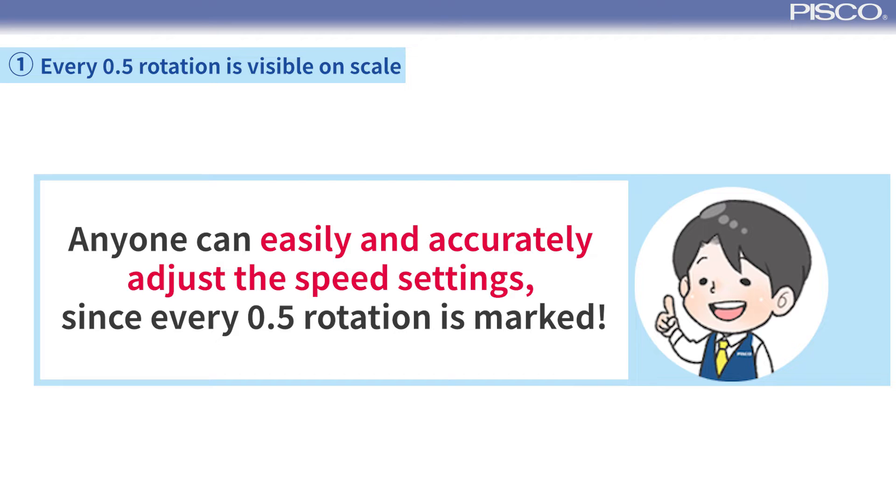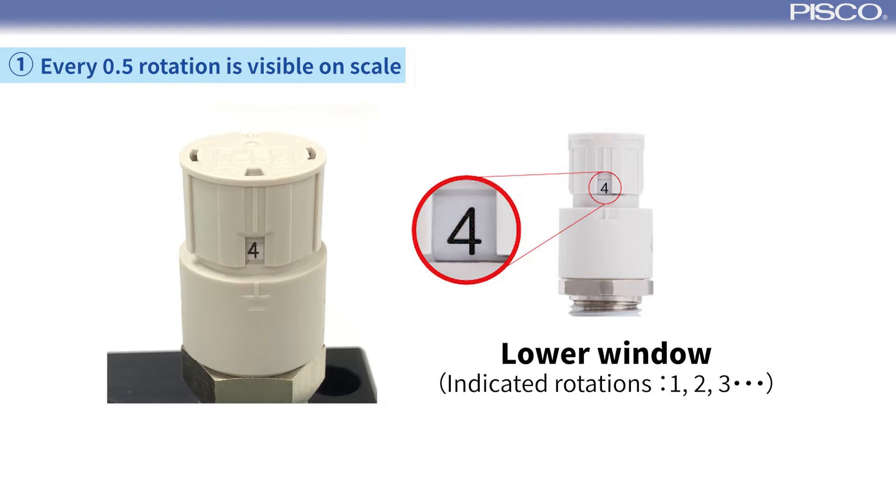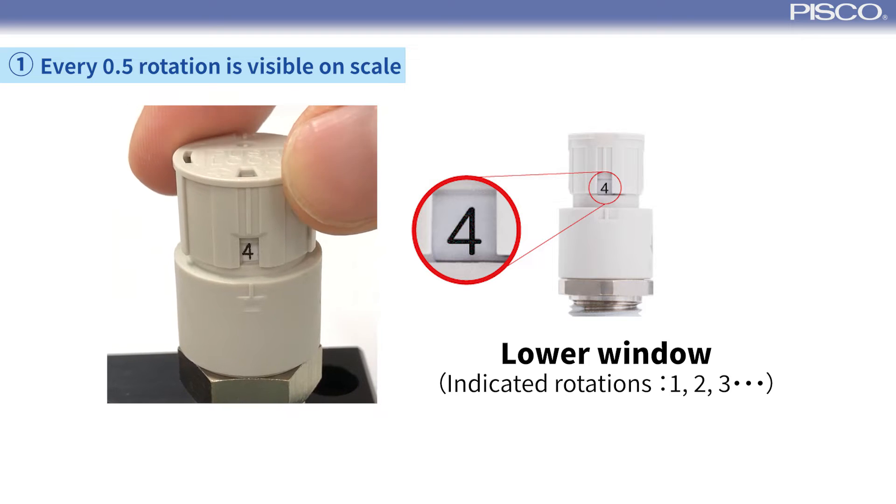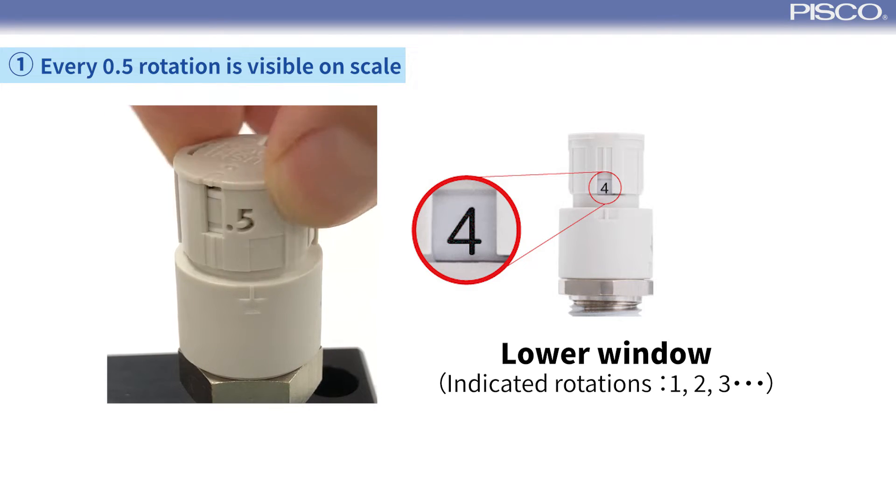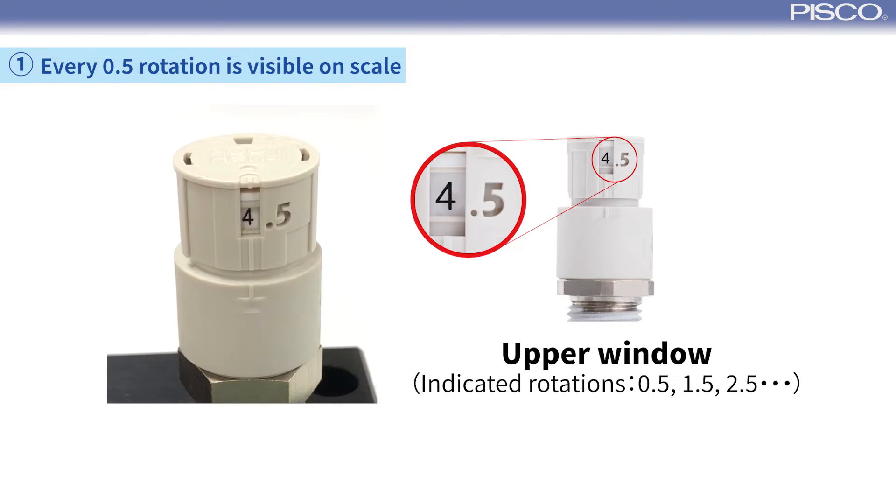Anyone can easily and accurately adjust the speed settings as every 0.5 rotation is marked. In the window on the lower side, the number of rotations can be checked. And in the window on the upper side, you can check the number of rotations in 0.5 increments.